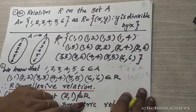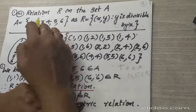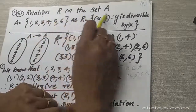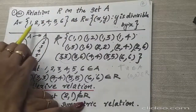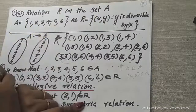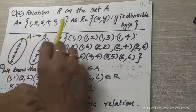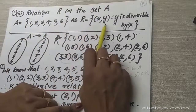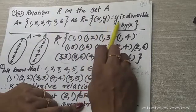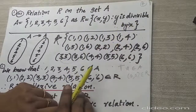I am going to explain the third sub-question of main question 1. Here, relation R in the set A, where A is equal to {1, 2, 3, 4, 5, 6}, and the relation R is equal to {(x, y) such that y is divisible by x}.